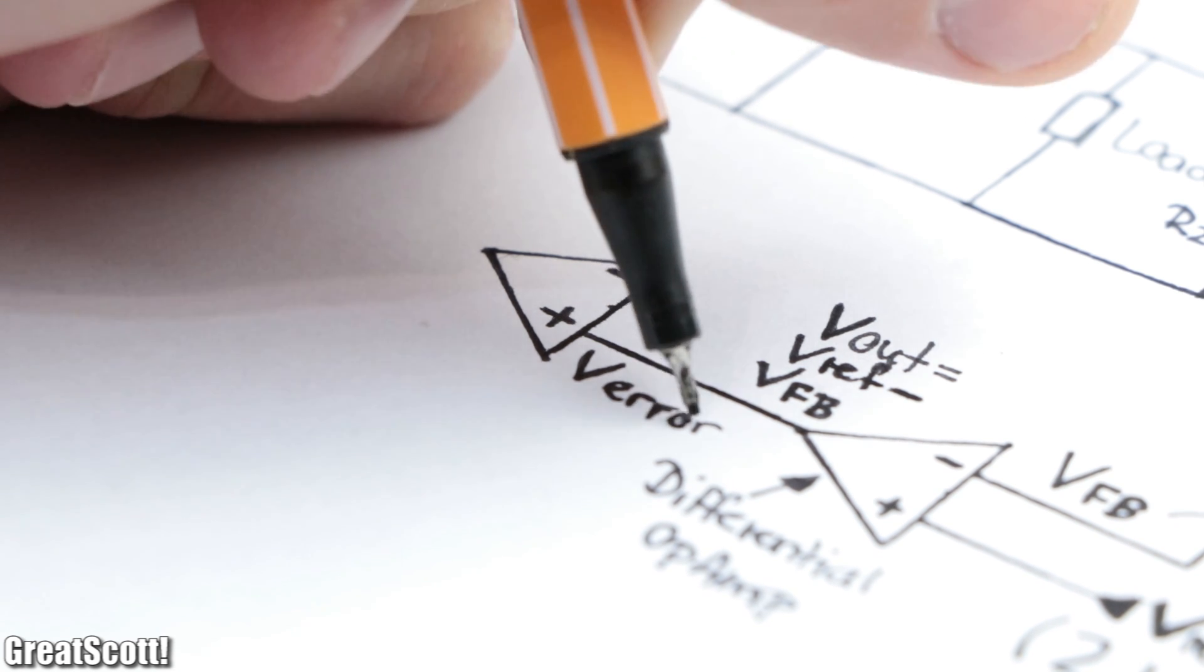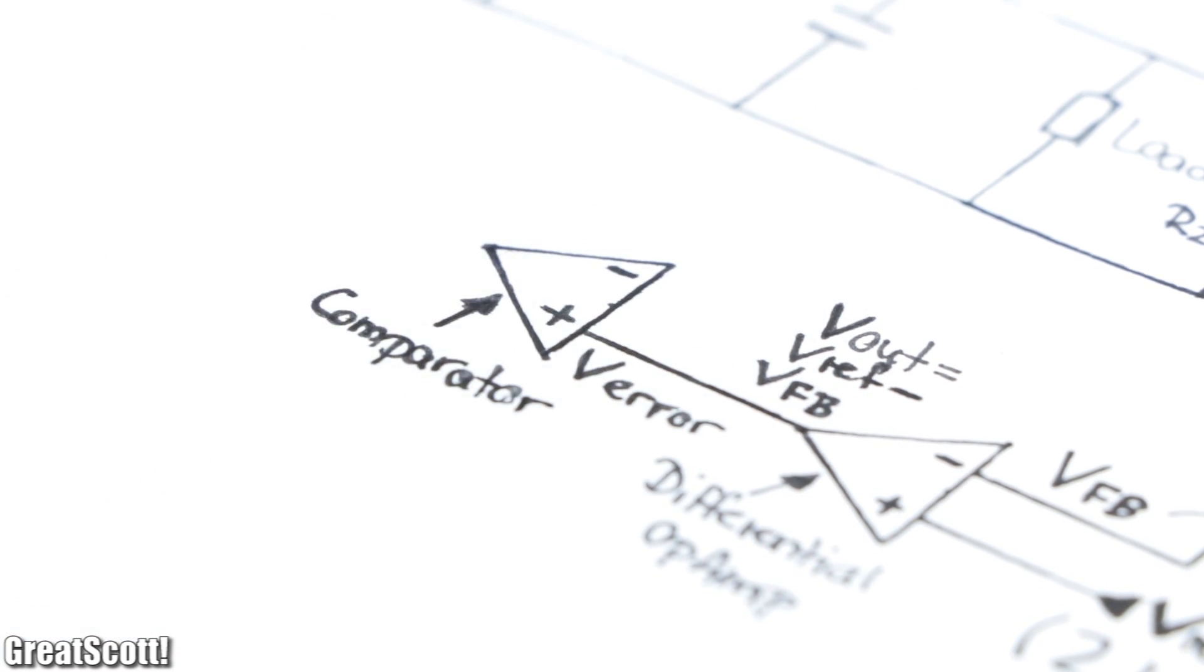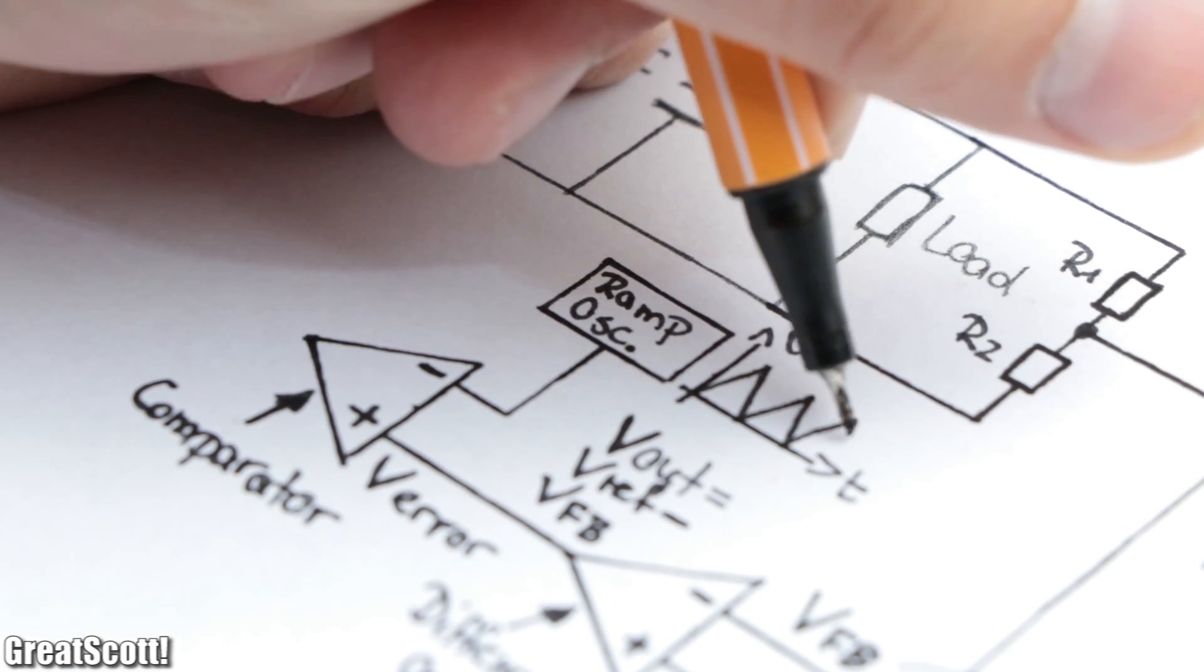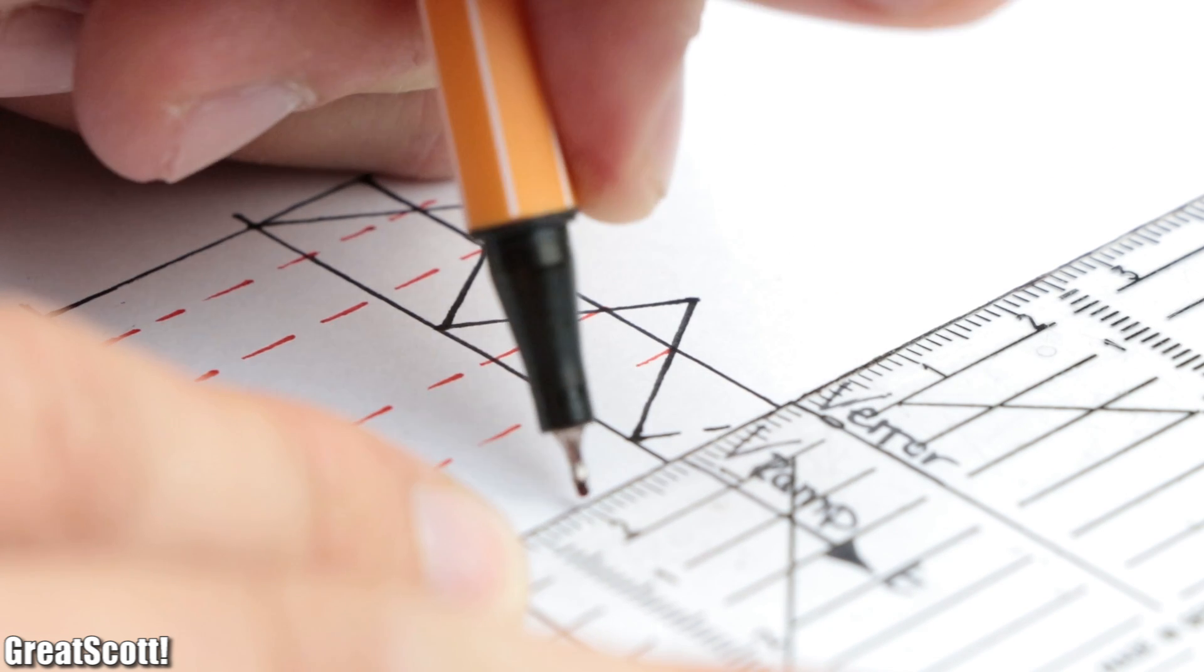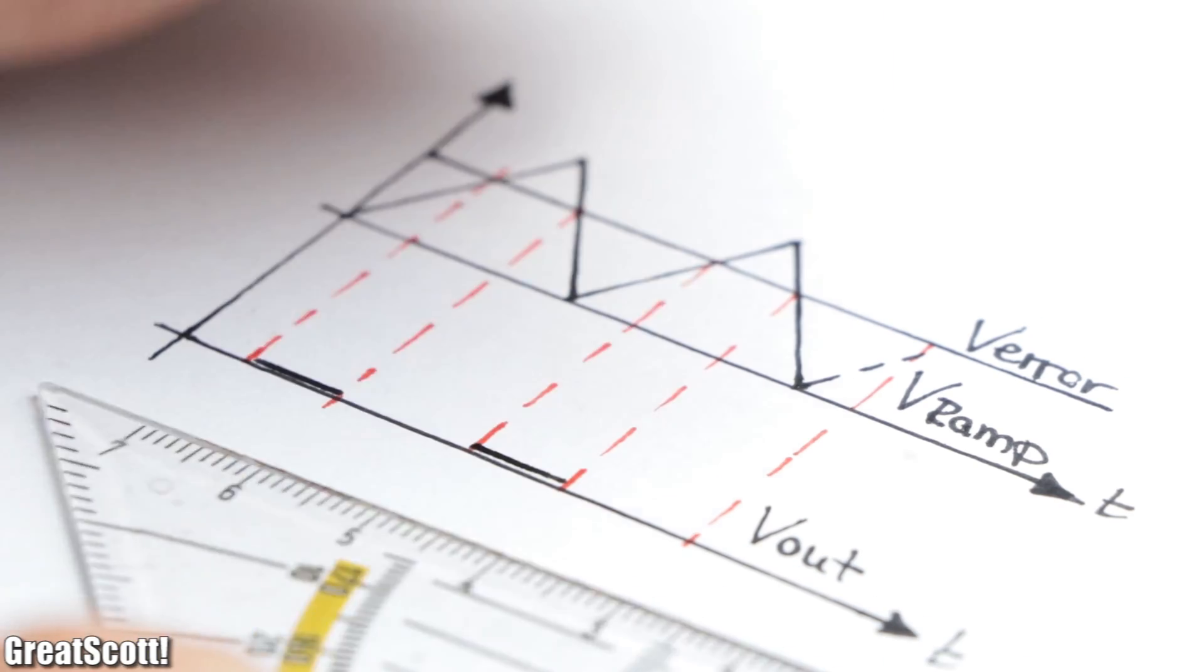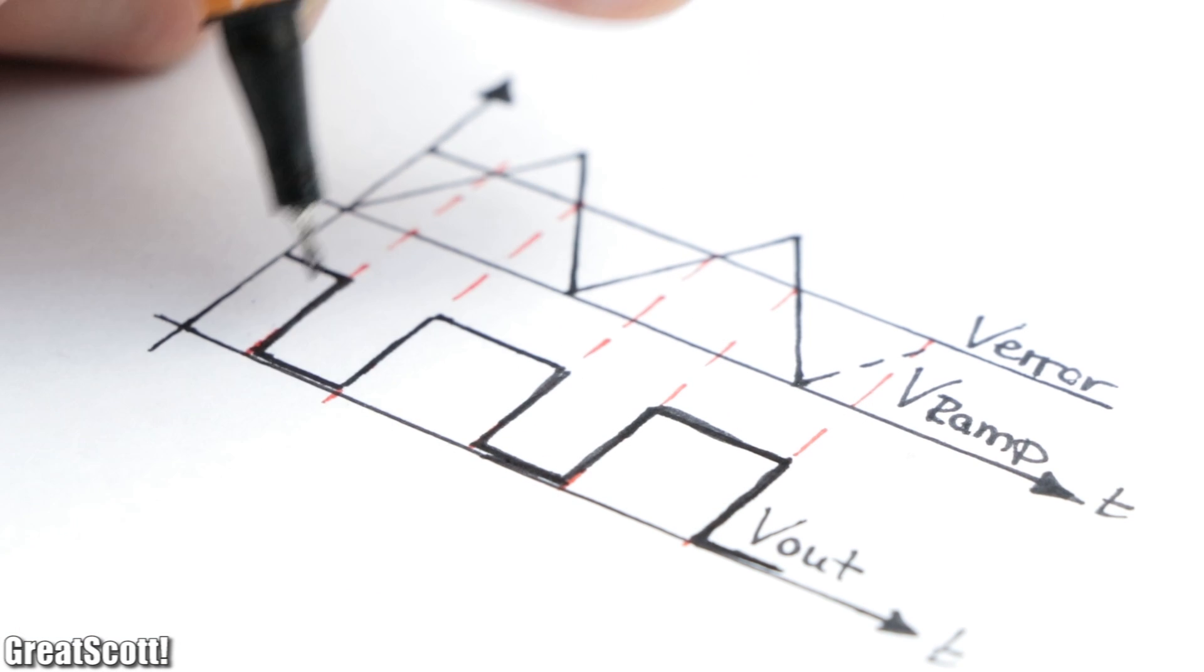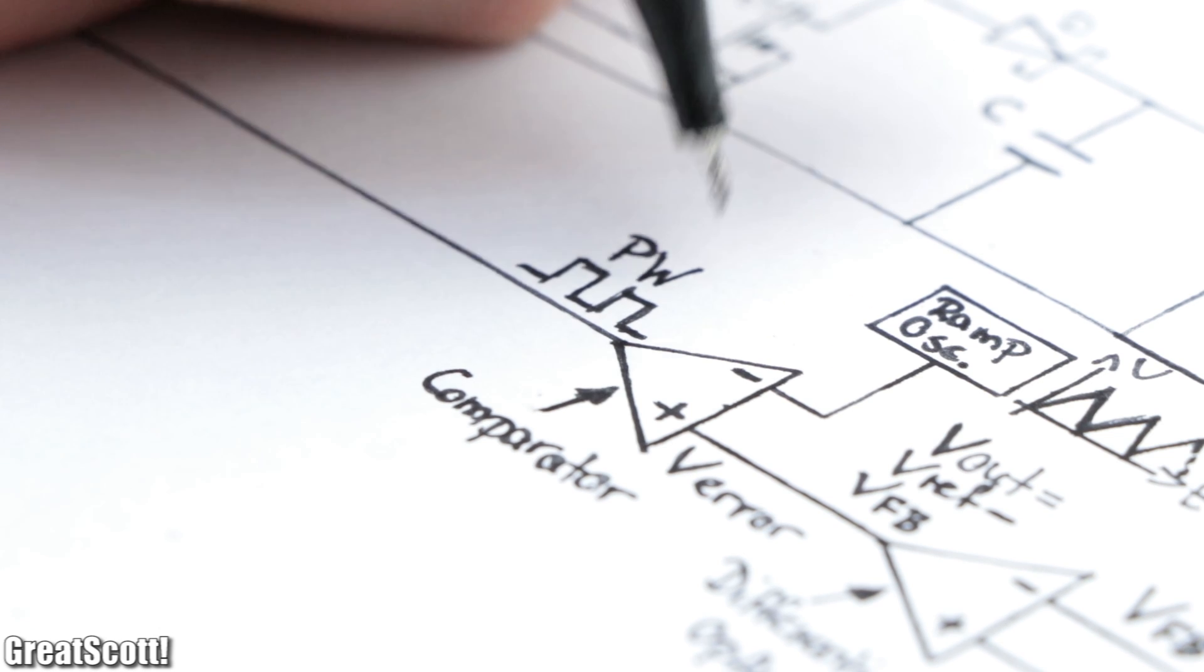Next, this resultant error voltage feeds into the non-inverting input of a comparator, while the inverting input of the comparator is connected to a ramp oscillator that creates a triangle voltage. That means whenever the error voltage is lower than the triangle voltage, the output of the comparator is connected to ground. And whenever the error voltage is higher than the triangle voltage, the output is connected to VCC, which consequently creates a PWM signal which will control our MOSFET.